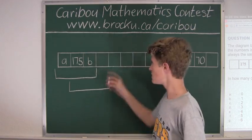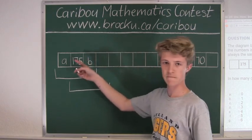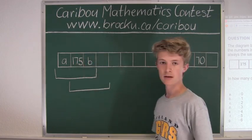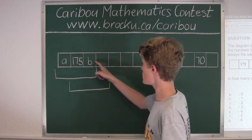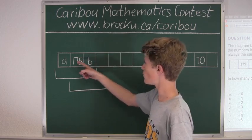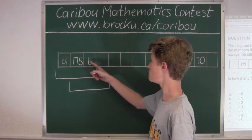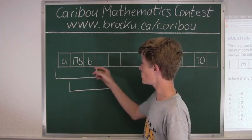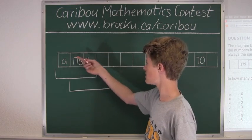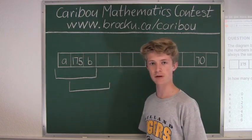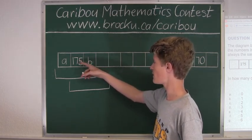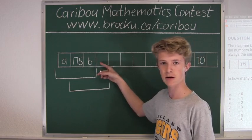So we know that the sum of any group of 3 consecutive boxes must be A, 175, and B. So as you can see, in this group of 3 consecutive boxes and this group of 3 consecutive boxes, we know that 175 and B overlap. So if we know that 175 and B added to A is the same sum as any other group of 3 consecutive boxes, then that means that since we know that 175 and B is here, we know that this box must be A.